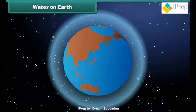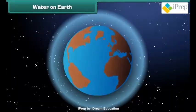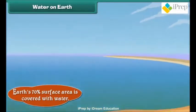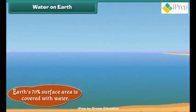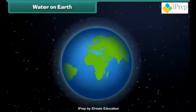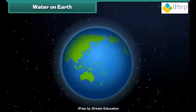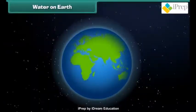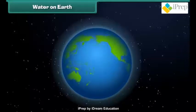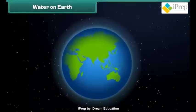What is the most abundant substance present on the earth? In fact, our earth's 70% surface area is covered with water. Do you know earth is also called a blue planet, because when seen from space it appears blue due to water.